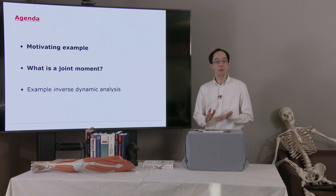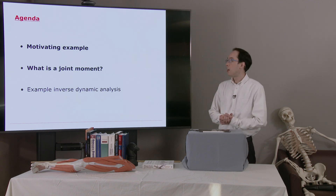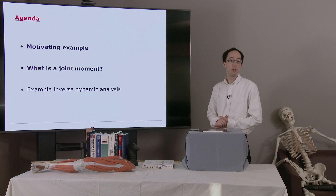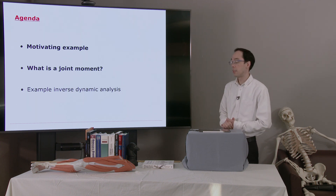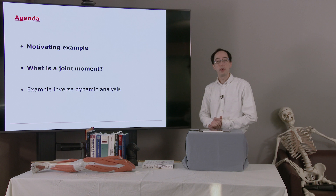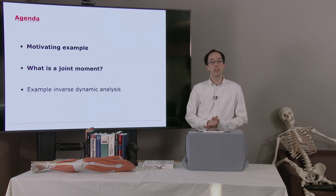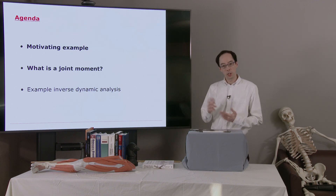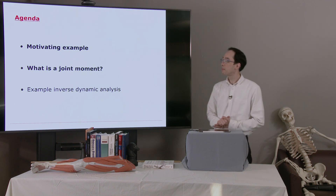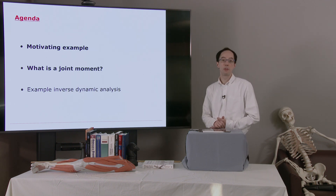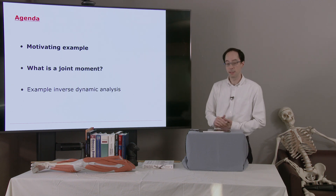Here's a quick outline for what we're going to do in this chapter. We'll start off with a quick motivating example. We've seen lots of examples of why joint moments could be useful, but we'll review another one today. We'll talk about what is a joint moment. In particular, we'll point out that it's net joint moments that we're going to be computing in Chapter 8. Finally, we'll look at the calculations we use to perform our inverse dynamic analysis.